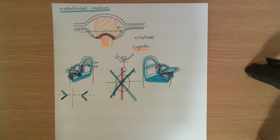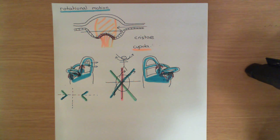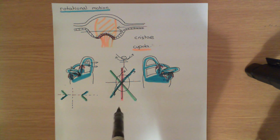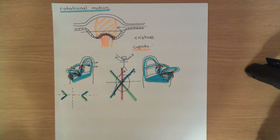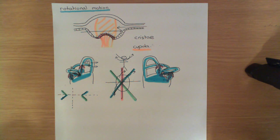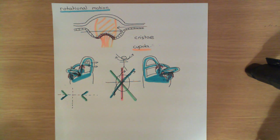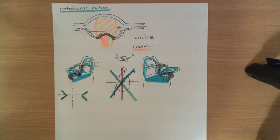The semicircular ducts encode information about how the head is actually rotating. It's important to understand: the otolith organs encode information about static head tilt and linear motion — static orientation of the head as well as linear motion — whereas the semicircular ducts encode dynamic rotation of the head, dynamic changes in orientation of the head. We've now been through how these different sensory apparatuses of the vestibular system actually encode this information into electrical signals that can be sent to the brain.